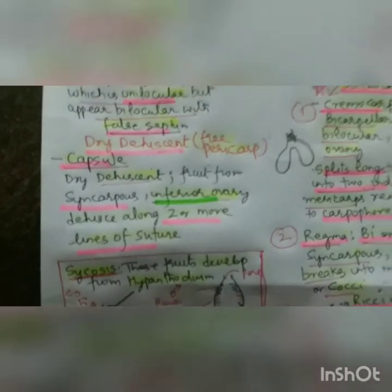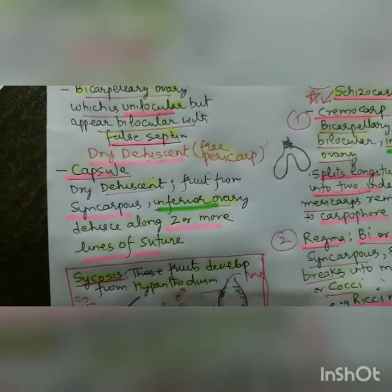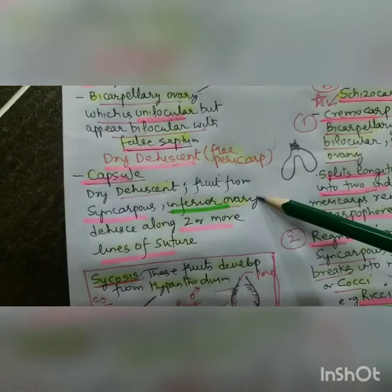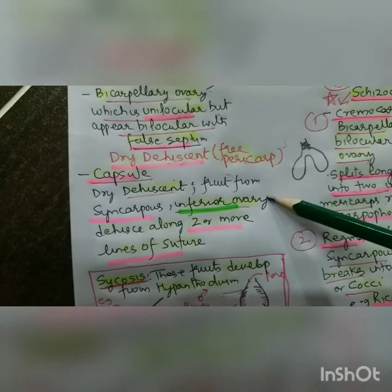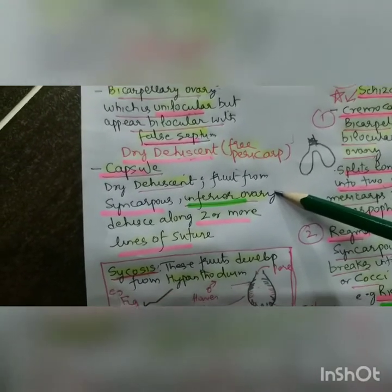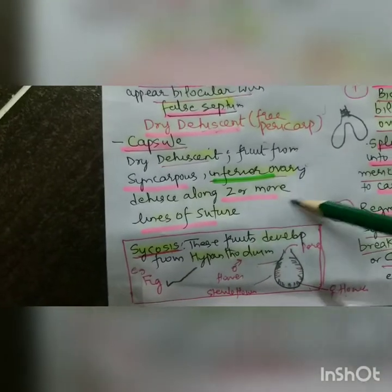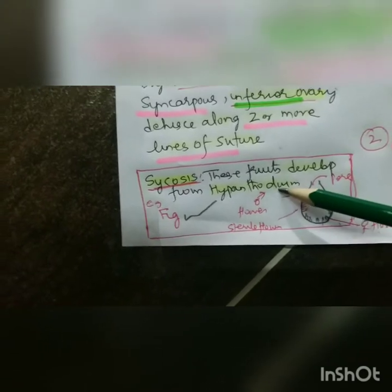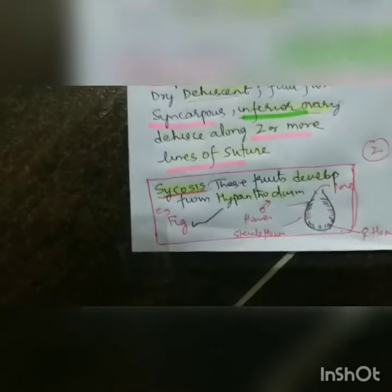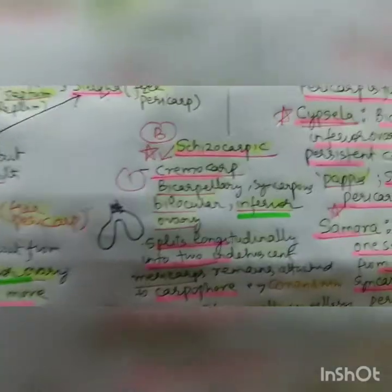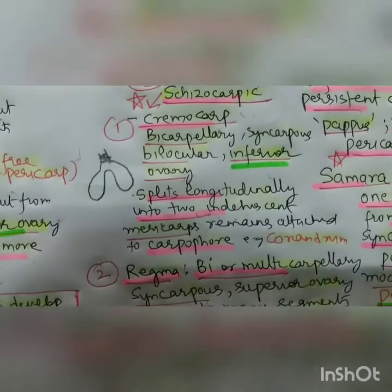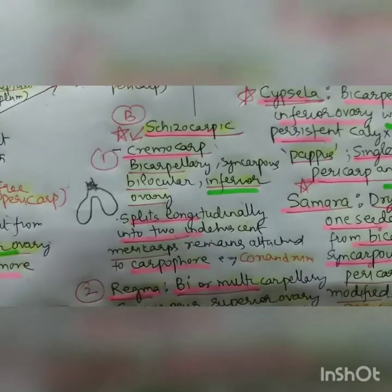Then we have the capsule. Capsule is the fruit from a syncarpous superior ovary - similar to cypsela - and it is dehiscent with two or more lines of suture. Yesterday I also told you that hypanthodium inflorescence gives rise to sorosis. The third type of fruit we did yesterday is cremocarp - very important, which we also covered in the Apiaceae family. I request you to see the videos of Umbelliferae for the detailed cremocarp and floral structure.